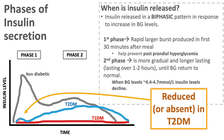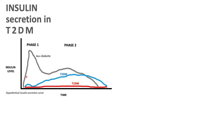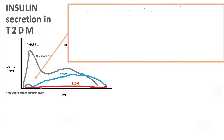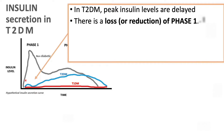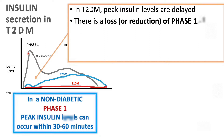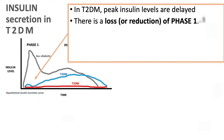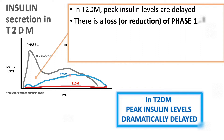Our focus here is that in type 2 diabetes we don't have a spike — we don't have a phase 1. It's either dramatically reduced or it's absent. In type 2 diabetes there is a loss or reduction in phase 1, and the peak insulin levels are also delayed. In a non-diabetic, peak insulin levels hit roughly 30 to 60 minutes, whereas with type 2 it's dramatically delayed — that could be, for example, two hours.